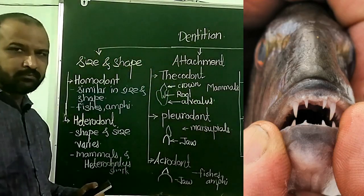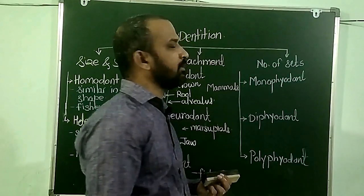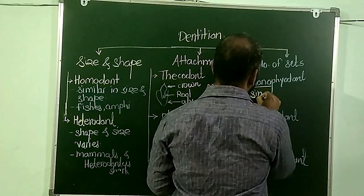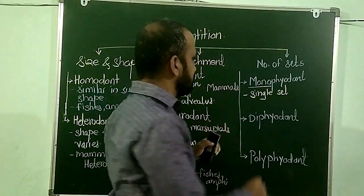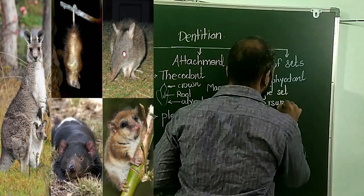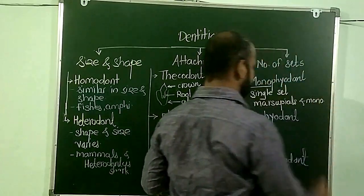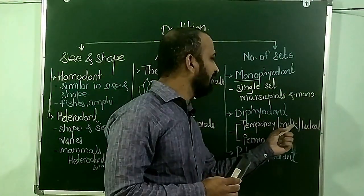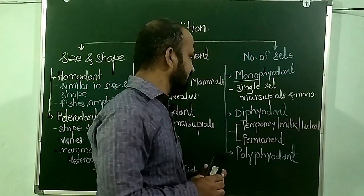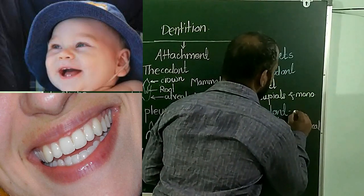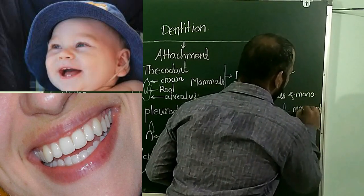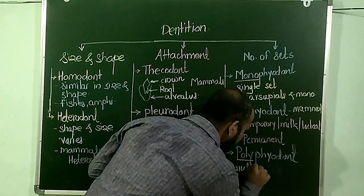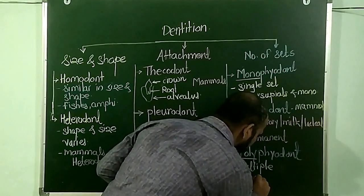The third classification is on the basis of number of sets. In case of the Monophyodont condition, mono means single — only a single set of teeth is present. This is present in marsupials and monotremes. The Diphyodont condition involves two sets of teeth: the first is called temporary, milk, lacteal, or deciduous set, and the second is the permanent set. This is present in mammals. The last one is the Polyphyodont condition, in which poly means multiple sets of teeth arise throughout the life — examples include lower vertebrates.